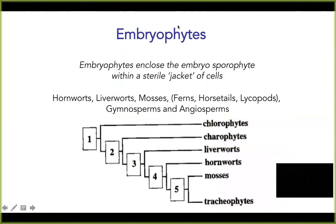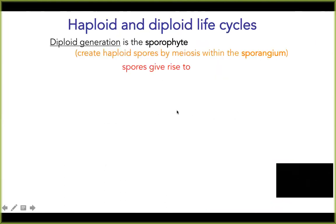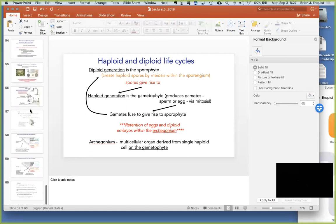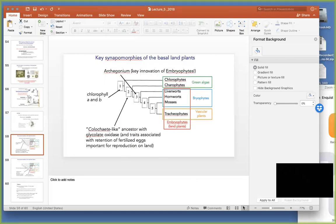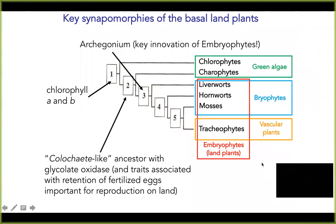Stepping back, the embryophytes are the land plants. The embryophytes are unique in that they enclose their developing embryo within a structure that forms a sterile jacket of cells around them. The embryophytes include hornworts, liverworts, mosses, but also ferns, horsetails, lycopods, gymnosperms, and angiosperms. In the interest of time, I'm going to end here, but in foreshadowing to our next series of lectures, I want you to memorize the basic land plant phylogeny.